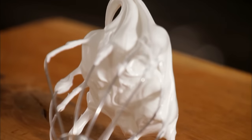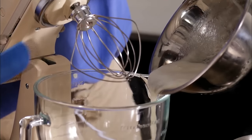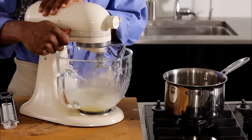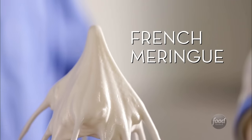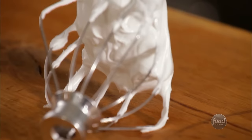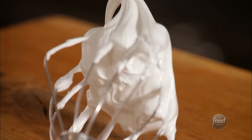Meringue is stiffly beaten egg whites and sugar. There are a few styles of meringues, here are two of our favorites. French meringue is an unheated meringue that should be cooked on top of pie such as in lemon meringue pie or as the base of meringue cookies and shells.